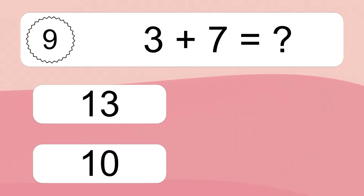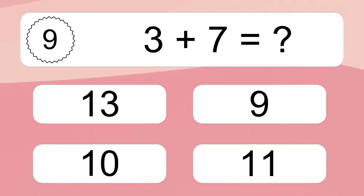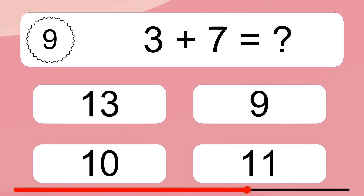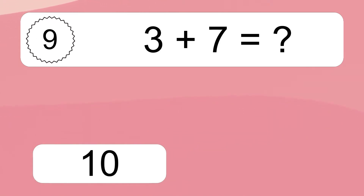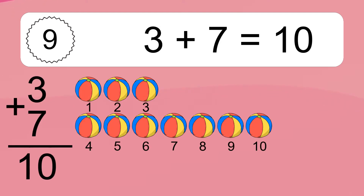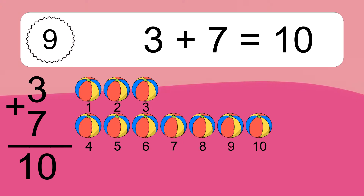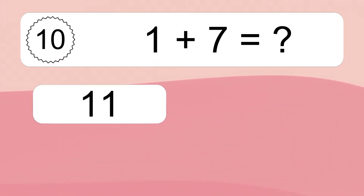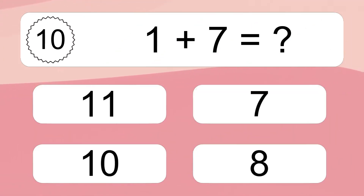3 plus 7 equals what? 3 plus 7 equals 10. Let's count it. 1, 2, 3, 4, 5, 6, 7, 8, 9, 10.